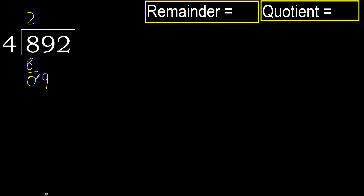Next, bring down: eliminate 0, bring down 9. 4 multiplied by 3 is 12 — 12 is greater. Multiply by 2 is 8, which is not greater. Subtract, next.